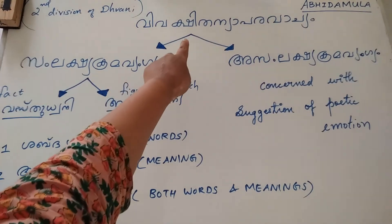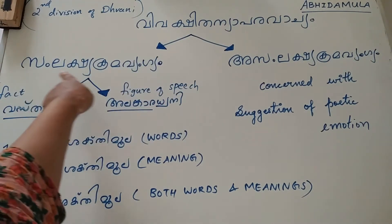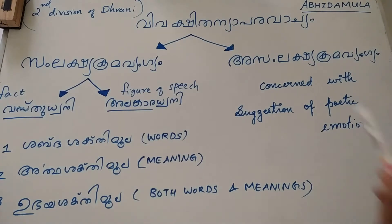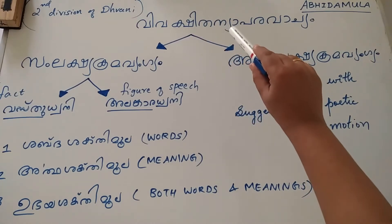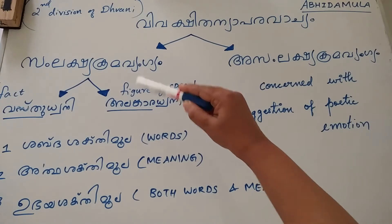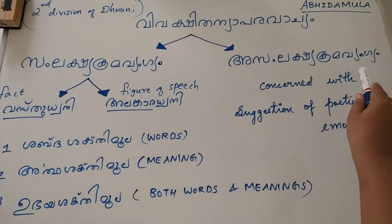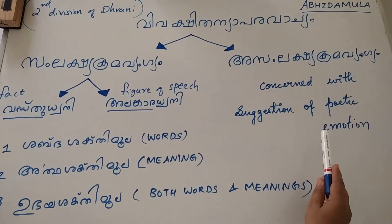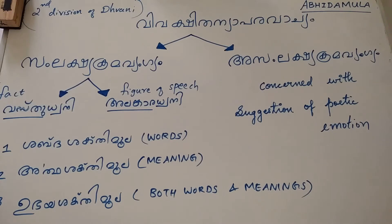Vivakshitanyaparavachya is divided into two: Samlakshya Krama Vangya and Asamlakshya Krama Vangya. Asamlakshya Krama Vangya is mostly concerned with suggestion of poetic emotion. So you find poetic emotions being suggested in poetry through Asamlakshya Krama Vangya.